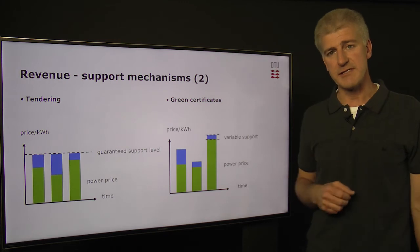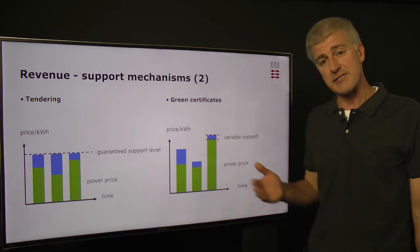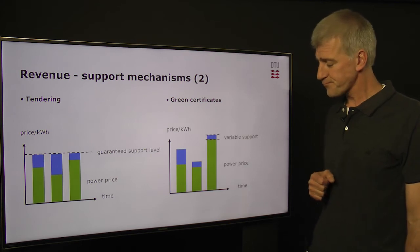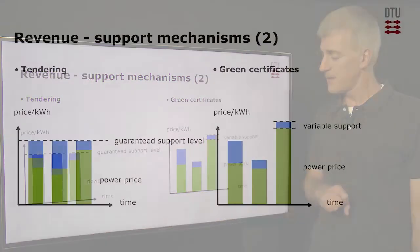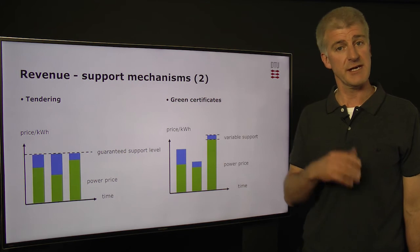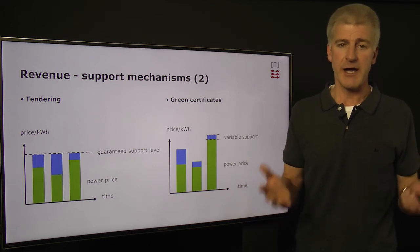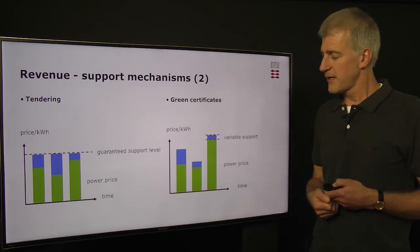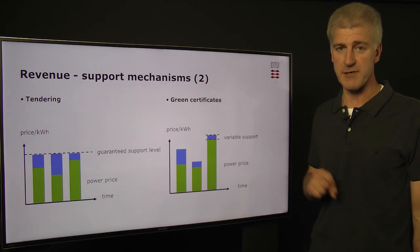Finally, we have the green certificate scheme. This is a little bit more complex. We sell the electricity into the market as usual, but for each megawatt hour of electricity that we produce, we get green certificates. On the other hand, users of electricity are obliged to buy a certain percentage of their electricity from renewable sources. If they don't, then they can buy these green certificates as some kind of make-up. In this way, we have a market of buying and selling these green certificates. It is quite a complex scheme to administer, and for that reason, it has not proved to be quite so popular.